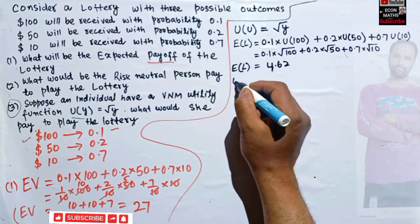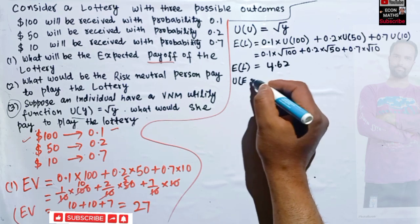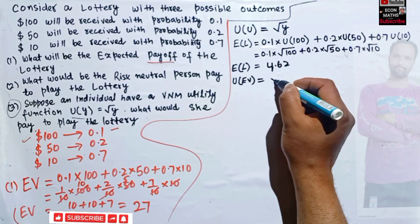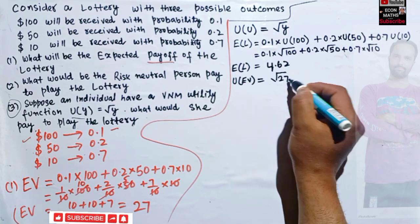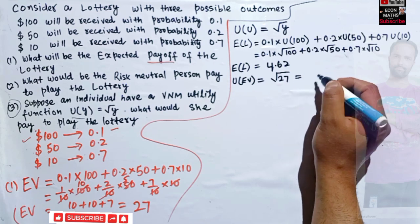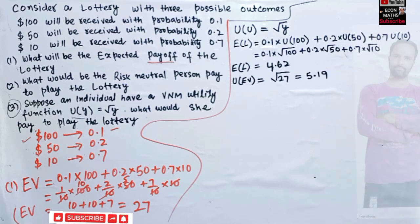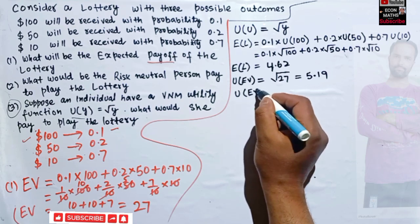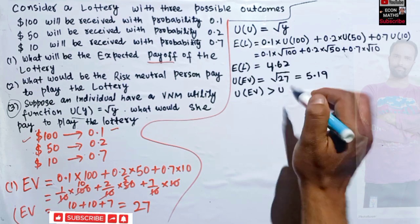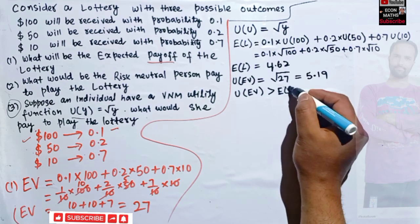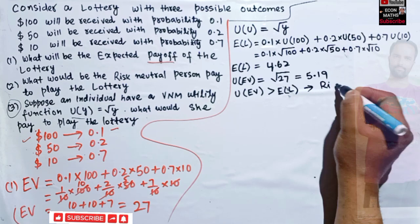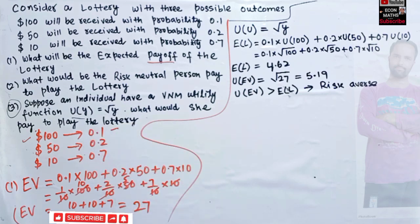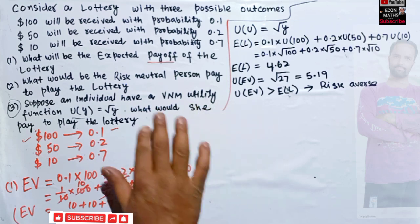Now we find the utility of the expected value. Our expected value is 27, so we compute U(27) = √27 ≈ 5.19. We can see that the utility of the expected value (5.19) is greater than the expected utility of the lottery (4.62). In this case we say the person is risk averse, and this concave utility function confirms that.